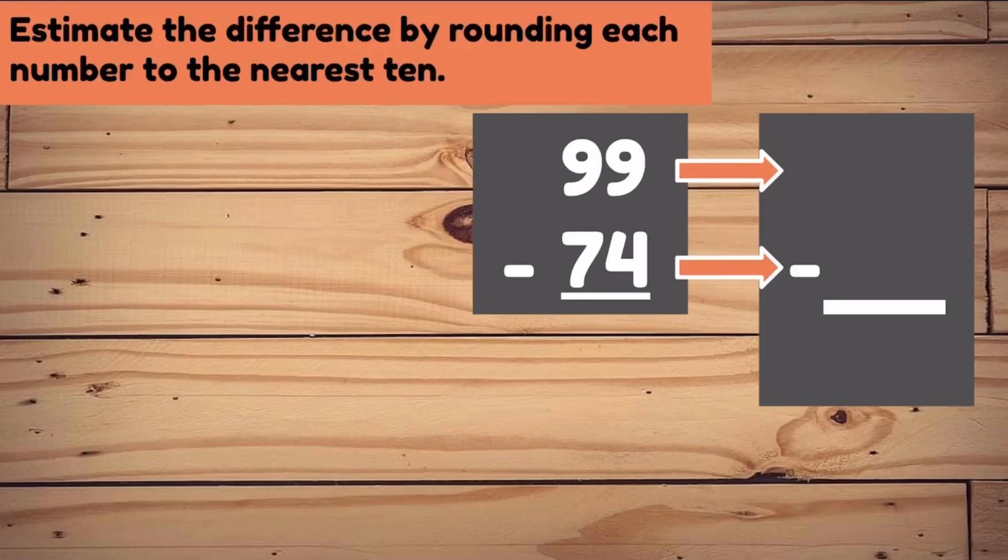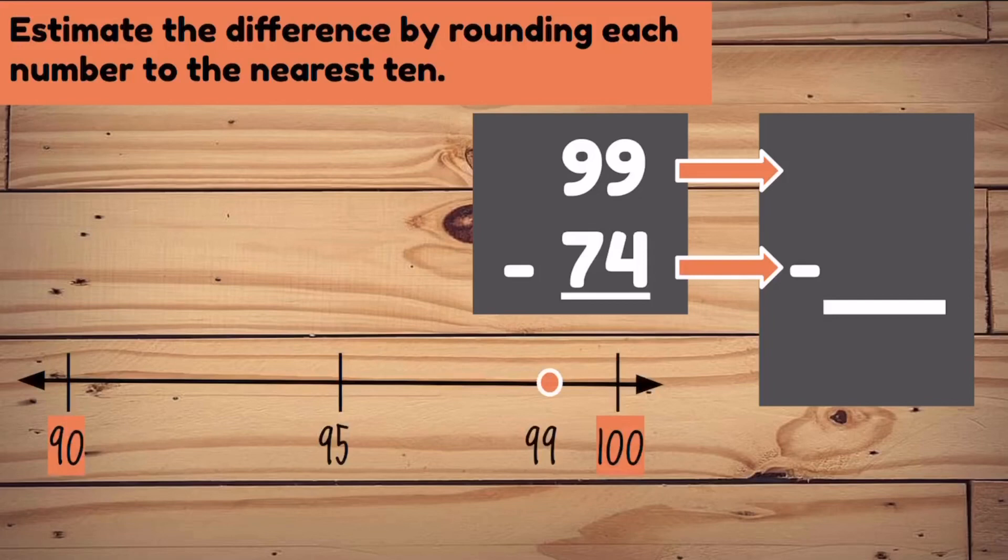We need to round 99 to the nearest 10. We need to think, 99 is surrounded by two 10s. The two 10s are 90 and 100. Let's think, is 99 closer to 90, or is it closer to 100? It's way closer to 100, so we know that 99 rounds to 100.